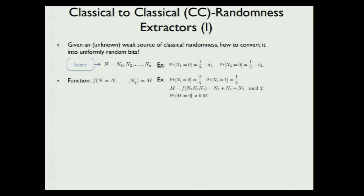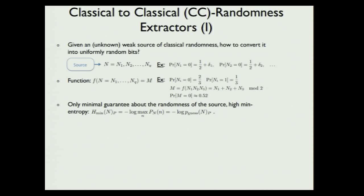Here is an example. We apply function F which takes N1 plus N2 plus N3 modulo 2, and we see that the output is nearly random — the probability of a 0 is 0.52, whereas for a single copy of Ni it was just two-thirds. But this function was specifically designed to work for this input; what we want is a function that works for all inputs, assuming only some guarantee about the entropy of the source.